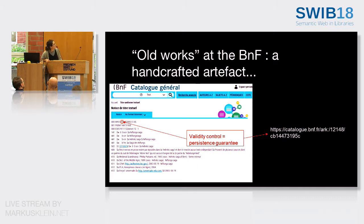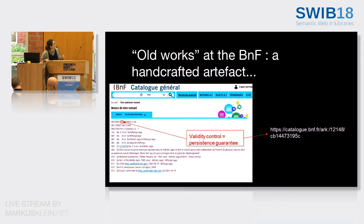What I call 'old works' at the BNF are works that were manually created for indexing needs — created when there was a study about the work. That means that for every bibliographic record describing an edition of a work at the BNF, there isn't necessarily a work entry point or work entity existing. Works are not systematic in the BNF because they've been created manually. We couldn't do that for every kind of edition at the BNF, because the BNF is a legal deposit institution — we receive every kind of edition published in France.